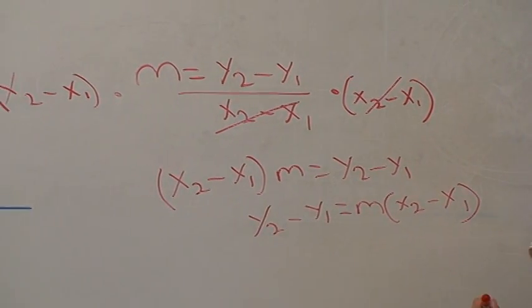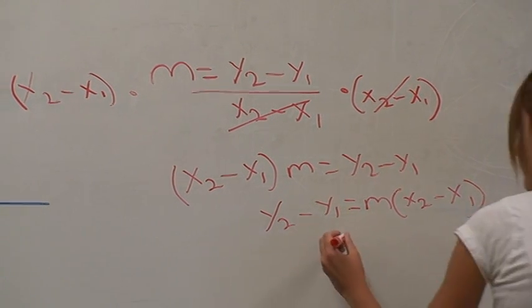At this point, we want to let y2 and x2 be any general points, x and y.